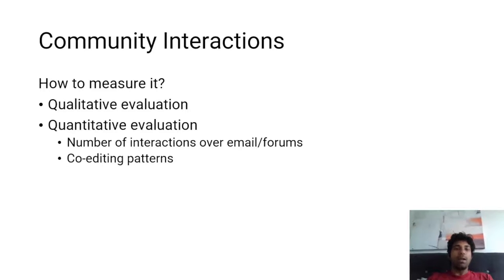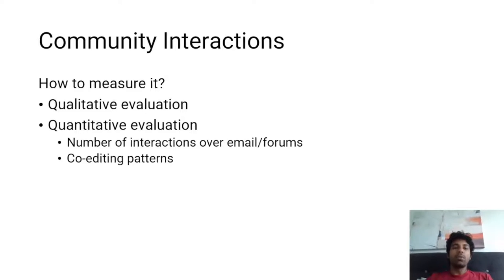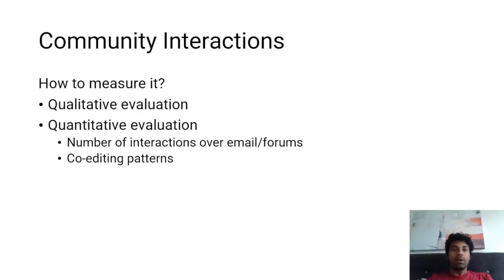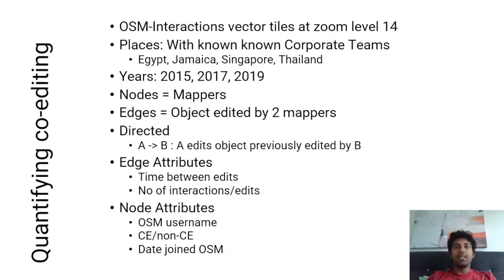Если разделить этот вопрос, есть несколько аспектов: можно оценить качество взаимодействия, можно количество — количество взаимодействий и шаблоны взаимодействий. Взаимодействие могут быть по почте или на форумах, но также можно оценить взаимодействие на карте — как данные создаются в OpenStreetMap, как взаимодействие между обычными и платными редакторами. В этом суть этой презентации: оценить паттерн совместного редактирования.